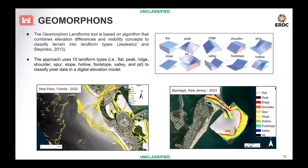Now we're talking about geomorphons — a tool based on an algorithm that combines elevation difference and visibility concepts to classify terrain landform types. This tool classifies ten types of landforms, which you can see in the top right panel: flat, ridge, shoulder, footslope, and others. Using this tool we can identify the area of the ebb-tidal delta — for example, for East Pass we can see the approximate area of the ebb-tidal delta, and for Barnegat Inlet we can see the location of the ebb-tidal delta as well.